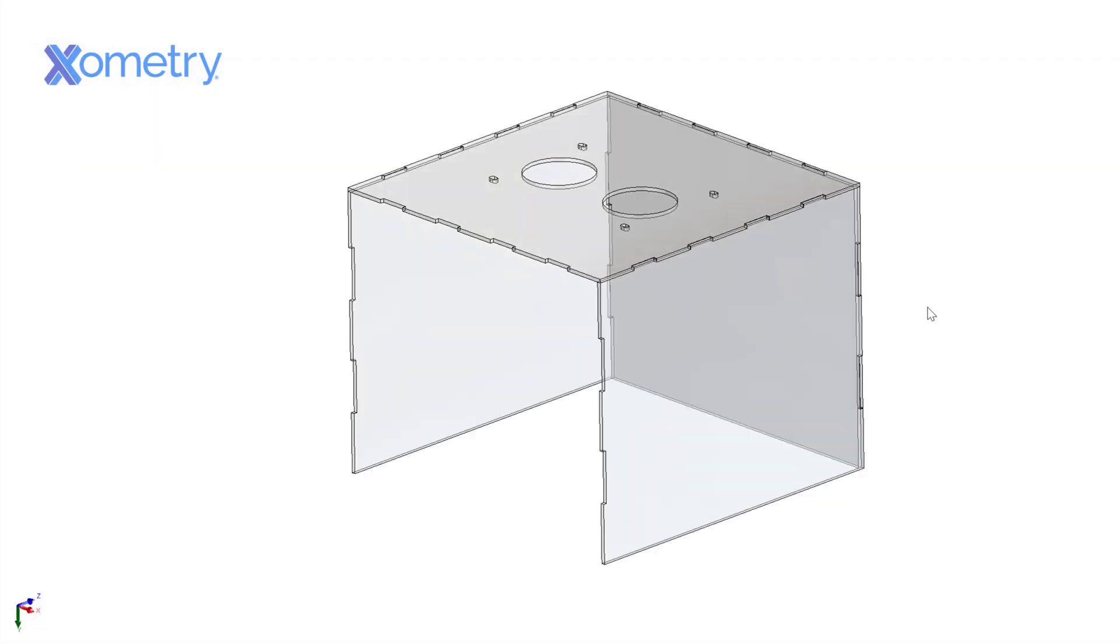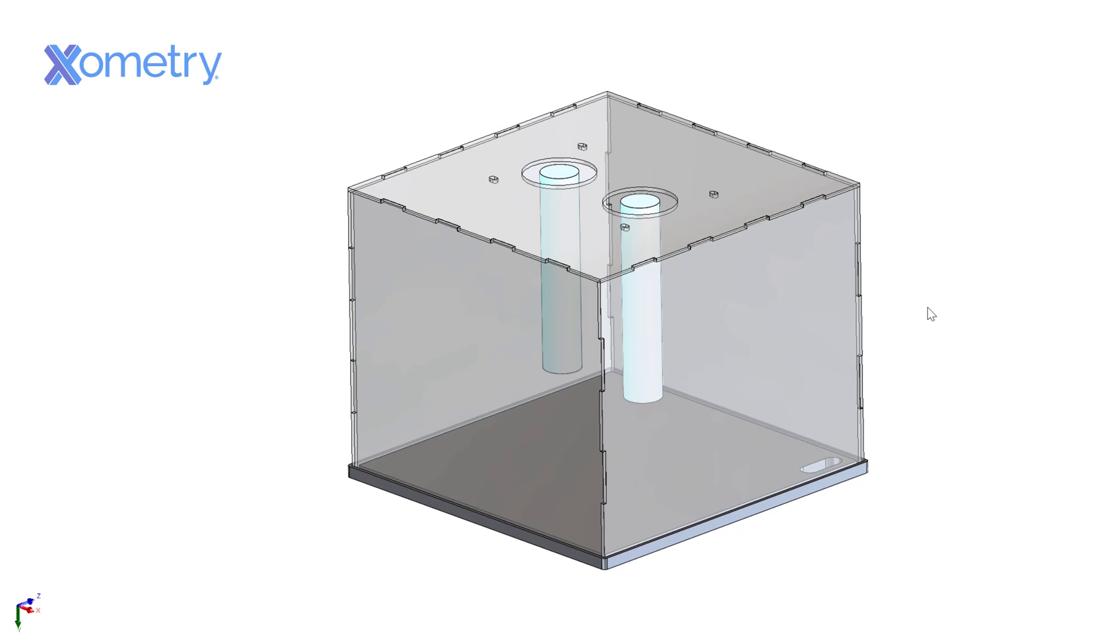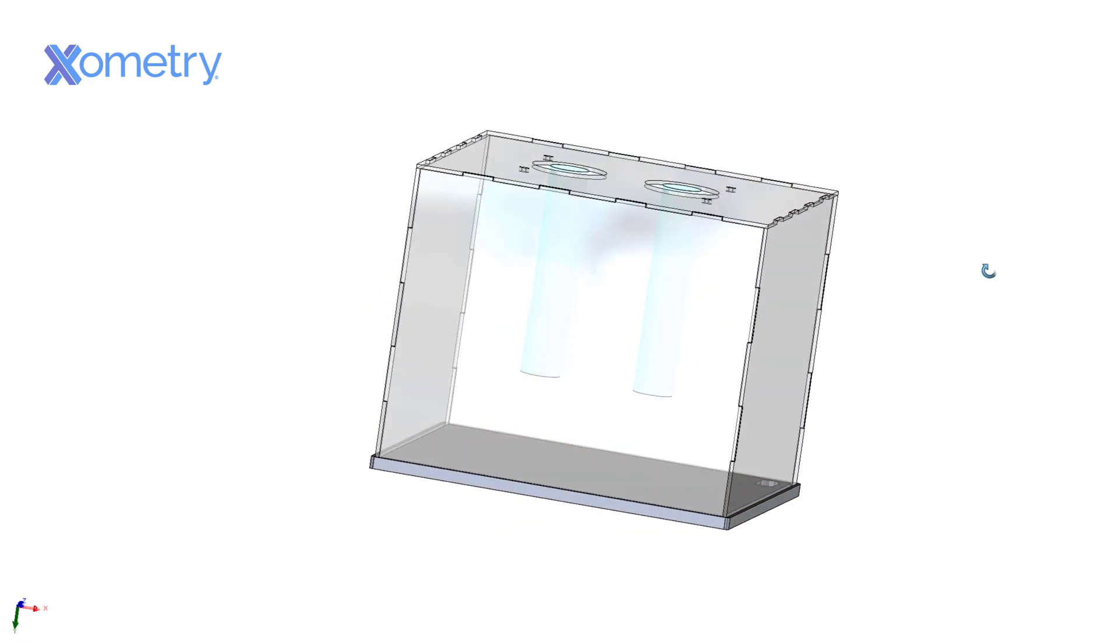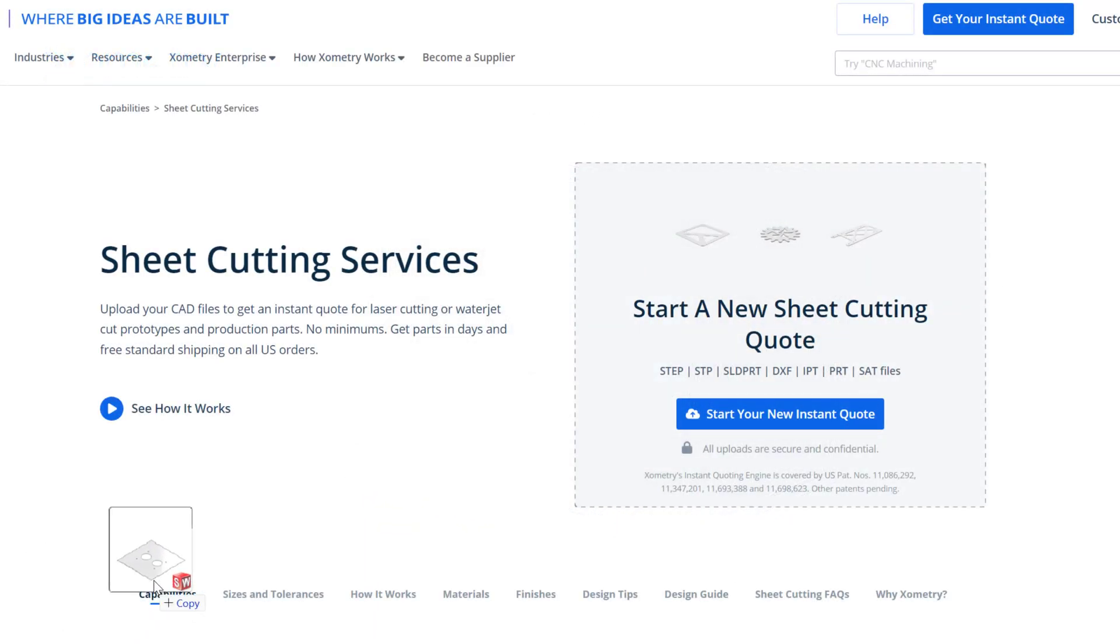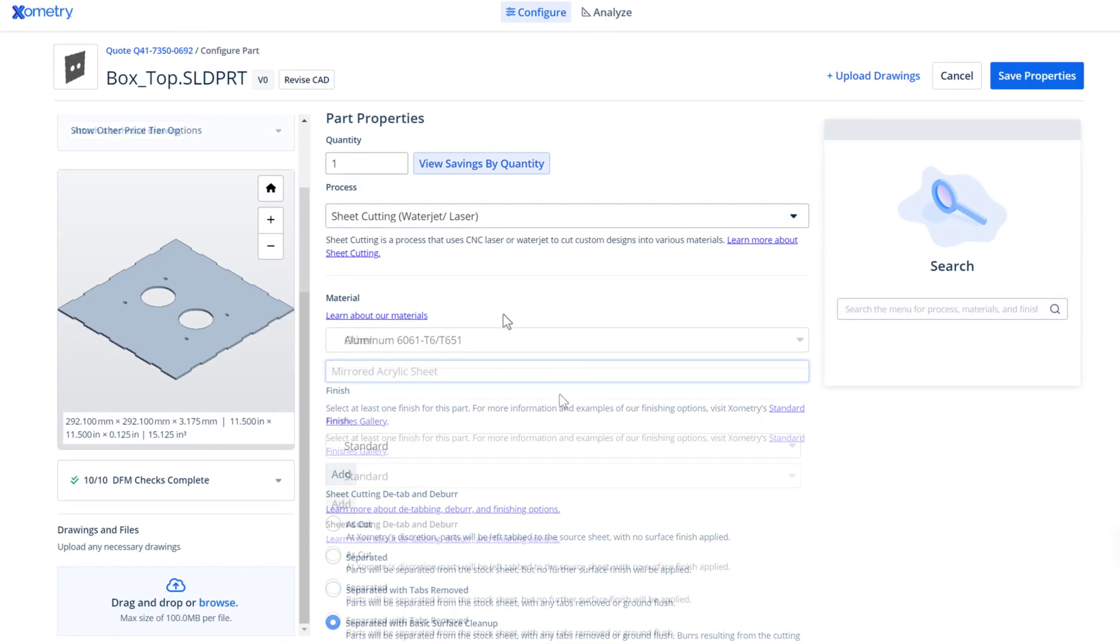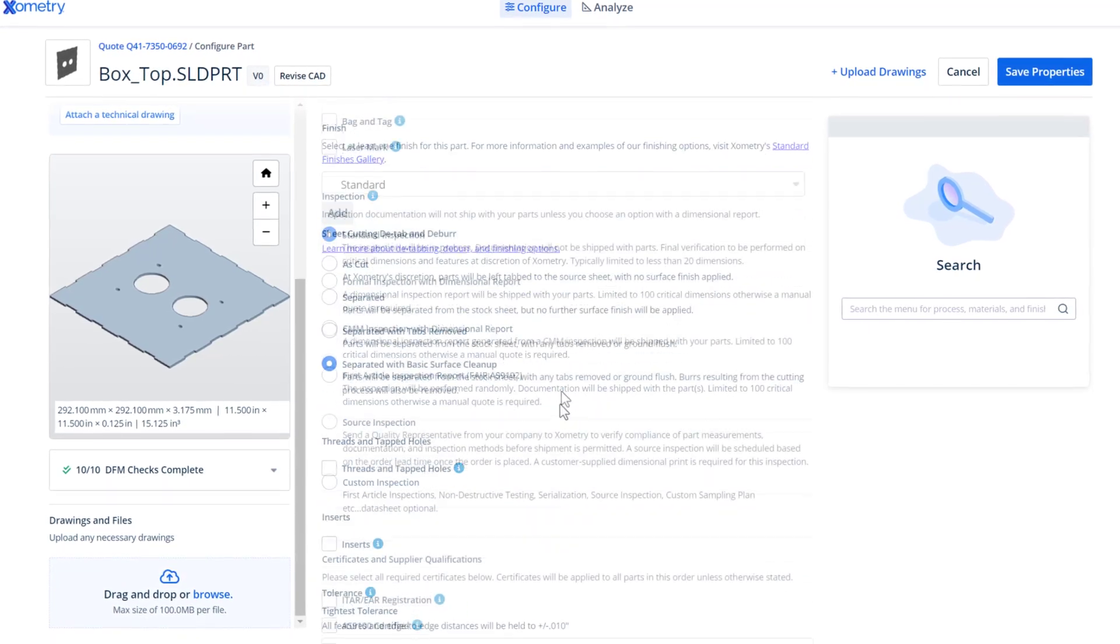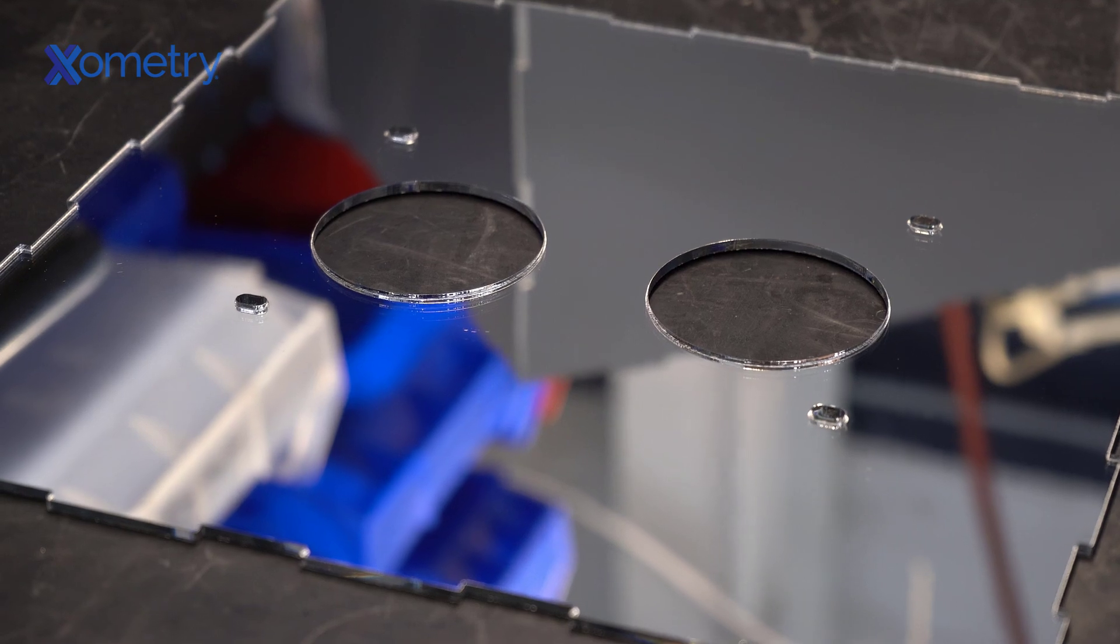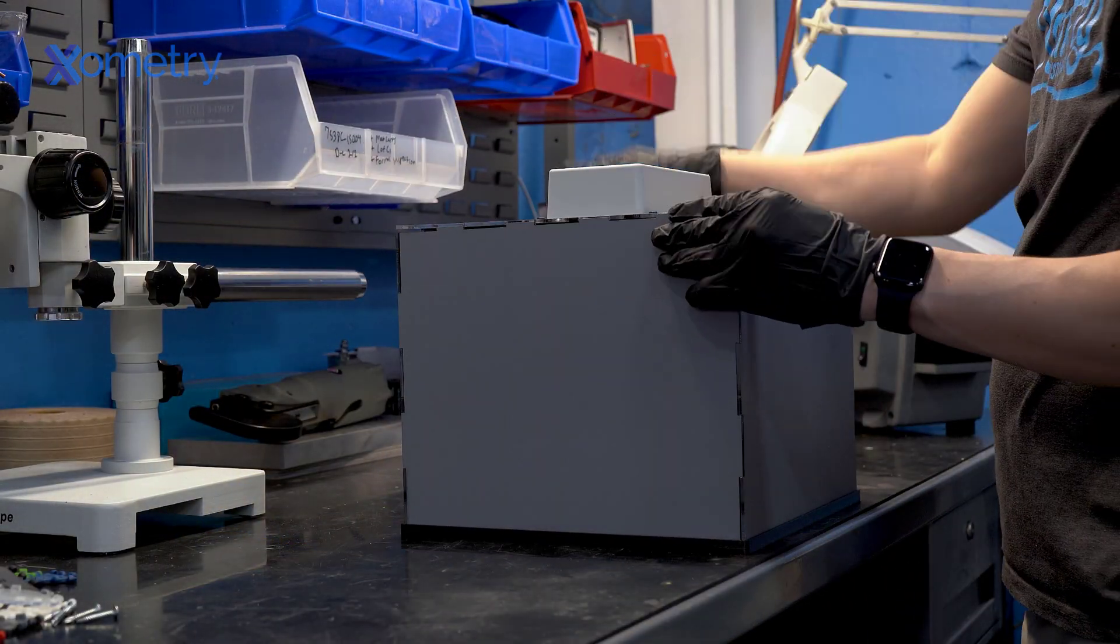We designed our custom light chamber out of several mirrored acrylic panels that fit together to form a box. Getting the custom parts cut was relatively simple thanks to our sheet cutting service. All it took was uploading the designs to our Xometry Instant Quoting Engine, specifying the process and material, and submitting an order. In only a few days, the pieces arrived and we were able to assemble the light chamber.